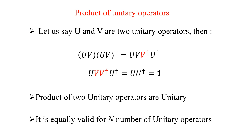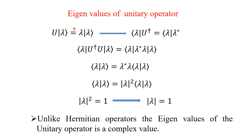Now we will see the eigenvalue of a unitary operator. If U is a unitary operator acting on |λ⟩, we get eigenvalue λ times |λ⟩. Taking the Hermitian conjugate, ⟨λ|U† = ⟨λ|λ*. So the eigenvalue of U on the bra side is the complex conjugate λ*.